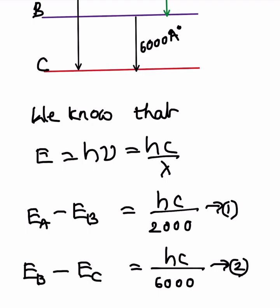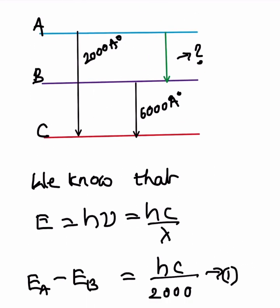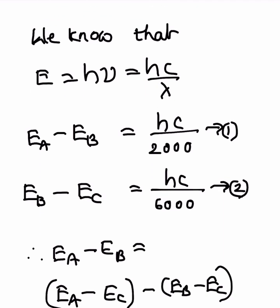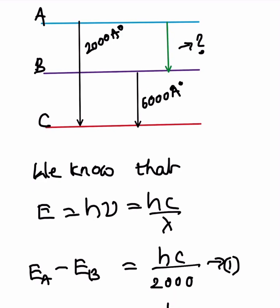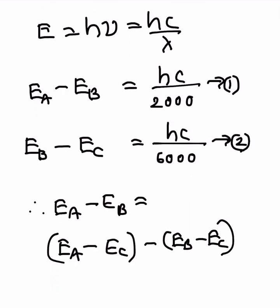Since ν equals c divided by λ, for the transition A to C giving 2000 angstroms, instead of substituting all the values of h and c individually, we can keep h·c together and substitute only λ. So E_a minus E_c equals h·c divided by 2000.